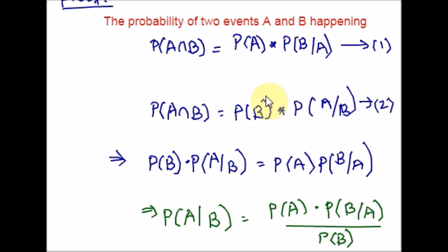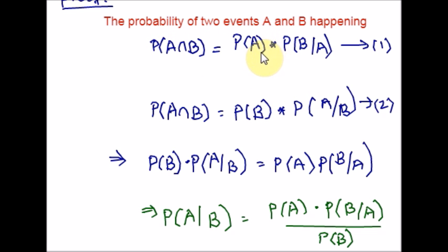To derive this theorem, we start from the definition of conditional probability. The probability of event A given event B is defined accordingly, and likewise the probability of event B given event A. Rearranging and combining these equations, we find the result. This can also be written as the lemma, sometimes called the product rule of probabilities.